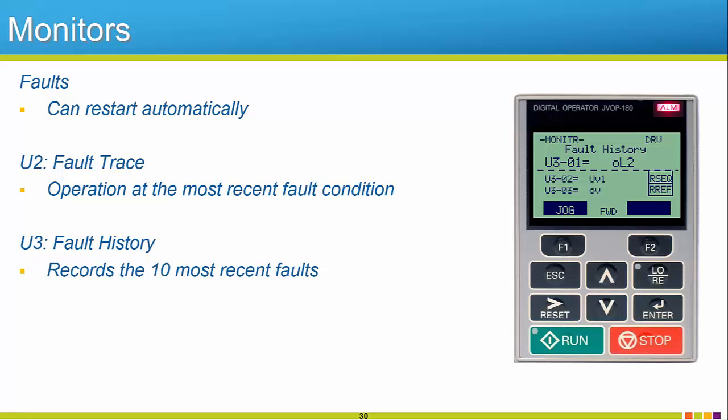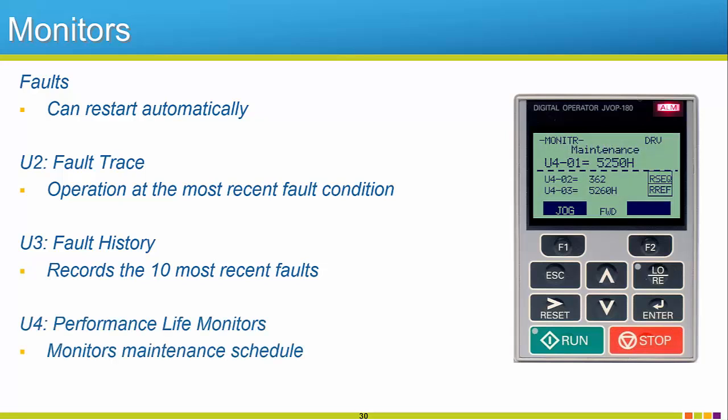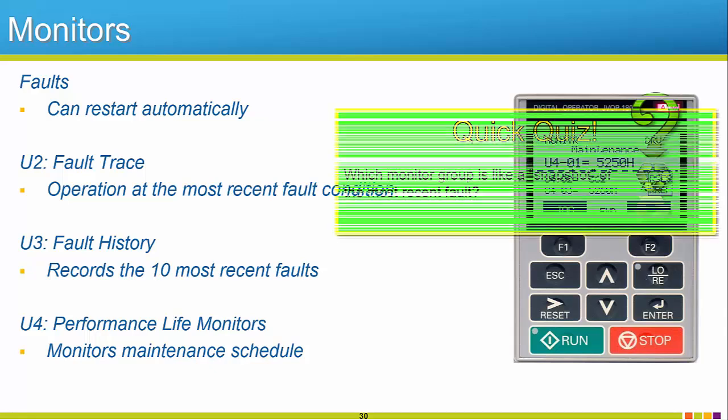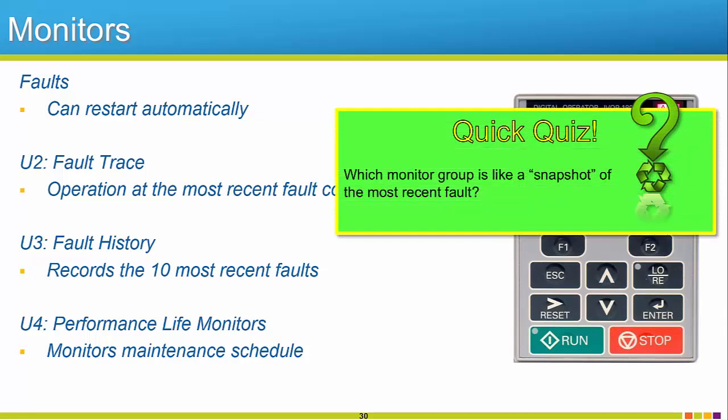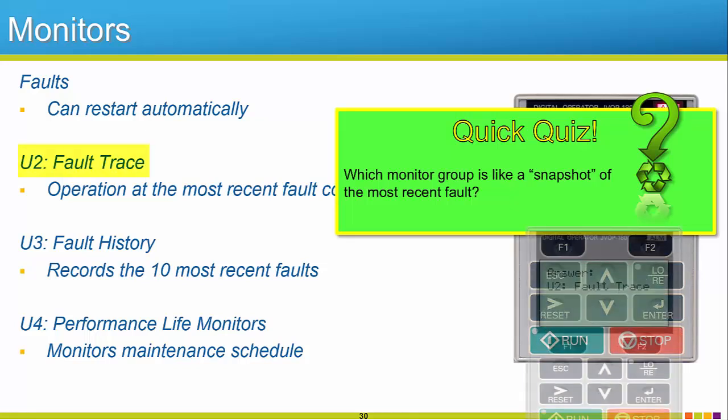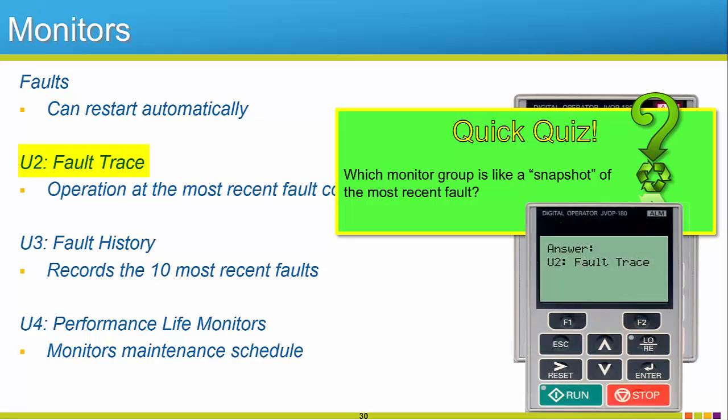The R1000's internal components are tied to yet another set of monitors, the U4 performance life monitors. These display what percentage of the estimated life of each component has been used. Once a certain level is reached, the keypad will give you a friendly reminder that preventative maintenance is recommended for the aging component. Quick quiz time. Which monitor group is like a snapshot of the most recent fault? The answer is the U2 fault trace group. The fault trace group can be described as a picture or a snapshot that was taken when the unit faults out. This snapshot stores key operation monitors so that the unit's troubleshooting can be done more efficiently.